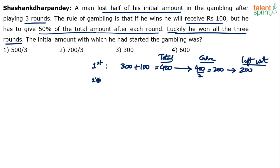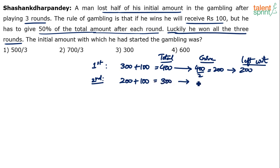After the second round: he had 200 rupees, won again earning 100 more, so total becomes 300. But he has to give half of 300 — that's 150 rupees gone. He is left with the remaining 150 rupees.